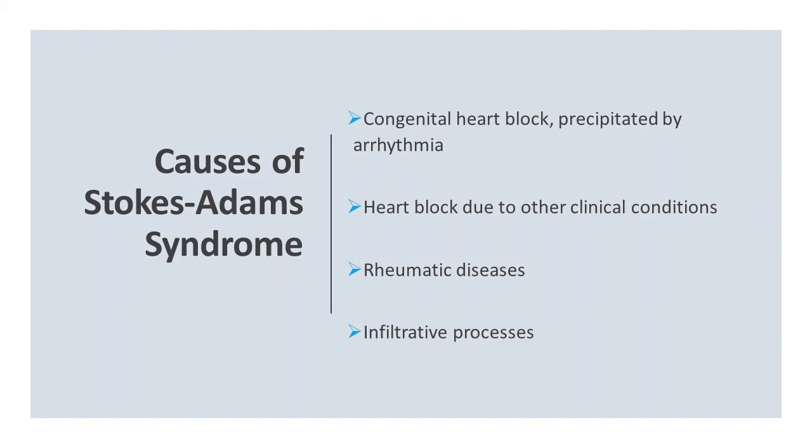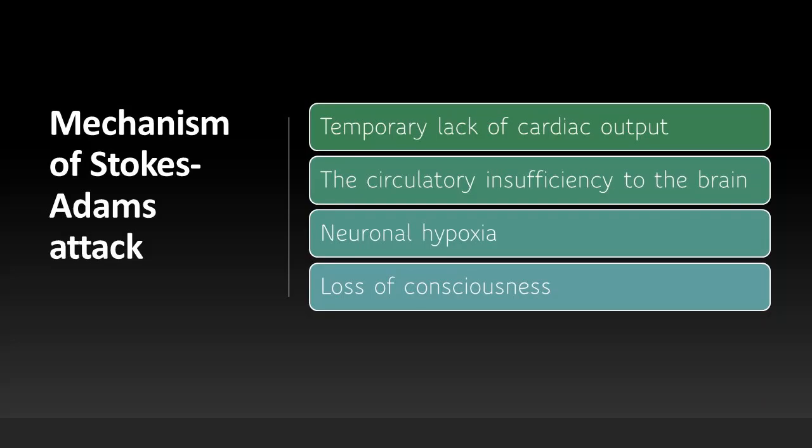What is the mechanism of Stokes-Adams attack? There is a temporary lack of cardiac output caused by transient arrhythmia such as paroxysmal supraventricular tachycardia, atrial fibrillation, atrioventricular or sinoatrial block. The circulatory insufficiency to the brain causes neuronal hypoxia, which is responsible for the loss of consciousness and fainting.